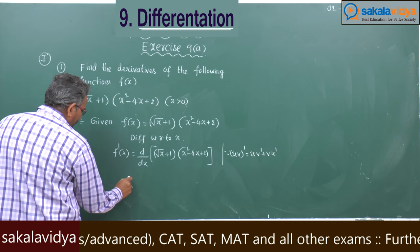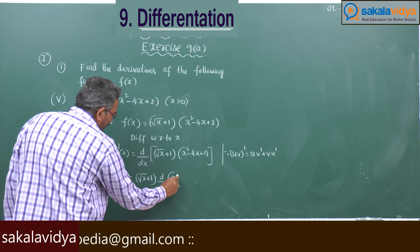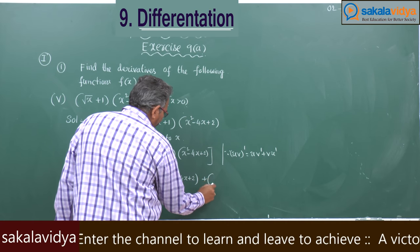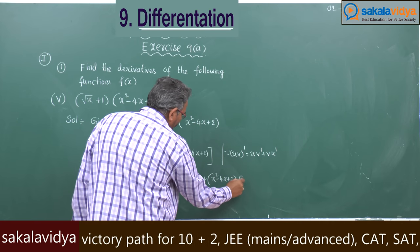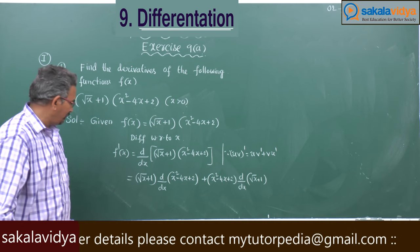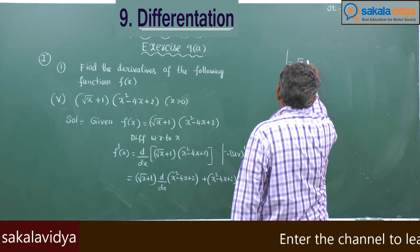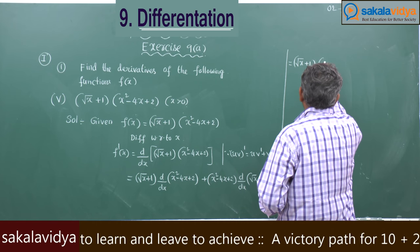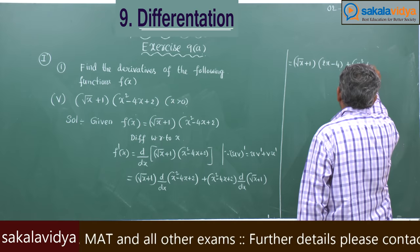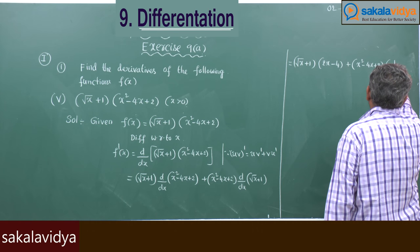This equals √(x+1) · d/dx(x² - 4x + 2) + (x² - 4x + 2) · d/dx(√(x+1)). Now, √(x+1) times the derivative of x² is 2x, and the derivative of -4x is -4. This is a very important step: the derivative of √x is 1/(2√x), and the derivative of a constant is 0.